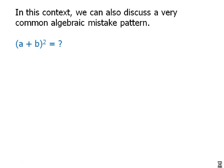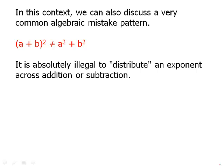So here's the common mistake. If we have a binomial squared, so many people are going to be tempted to say (a + b)² equals a² + b². They're going to be tempted to distribute that exponent and that is 100% incorrect. It is absolutely illegal to distribute an exponent across addition or subtraction. We can distribute multiplication across addition or subtraction. That's the distributive law. We cannot distribute an exponent.